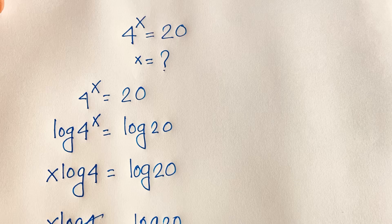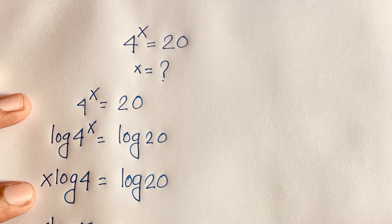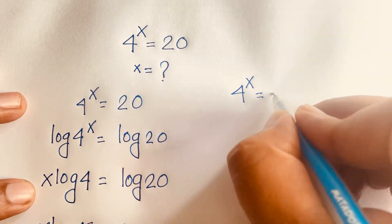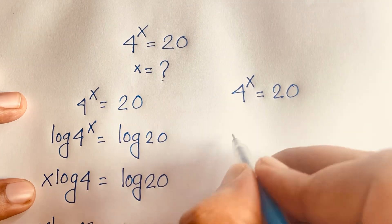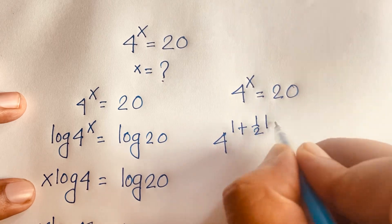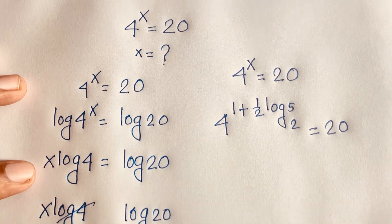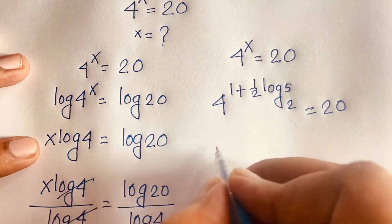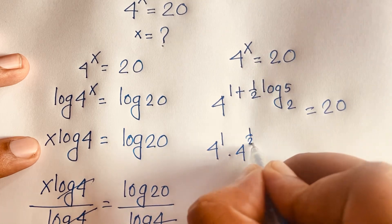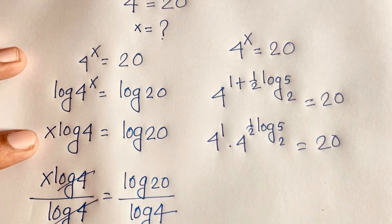Now let's verify. Our question is 4^x = 20, with x = 1 + ½ · log₂5. Substituting, we get 4^(1 + ½ · log₂5) = 20. Applying the exponential law, this becomes 4^1 · 4^(½ · log₂5) = 20.